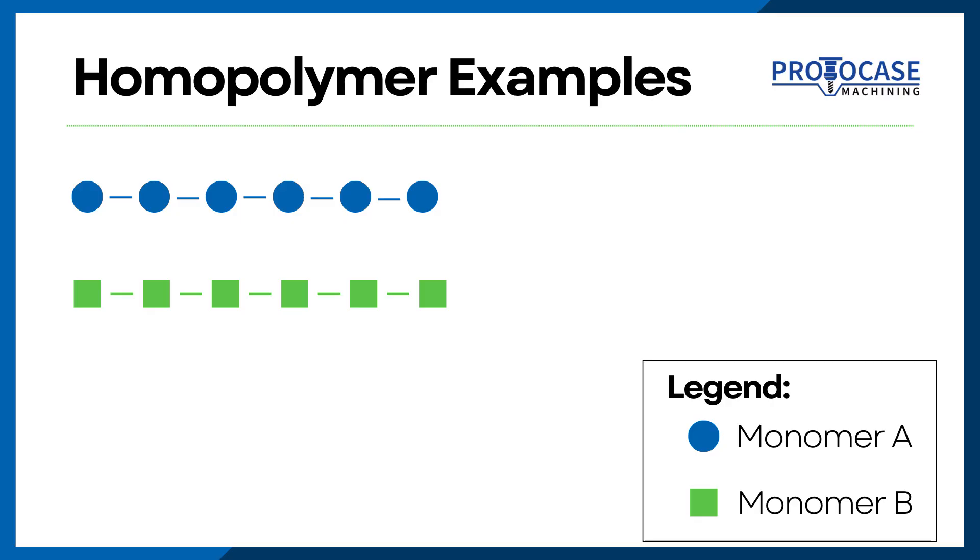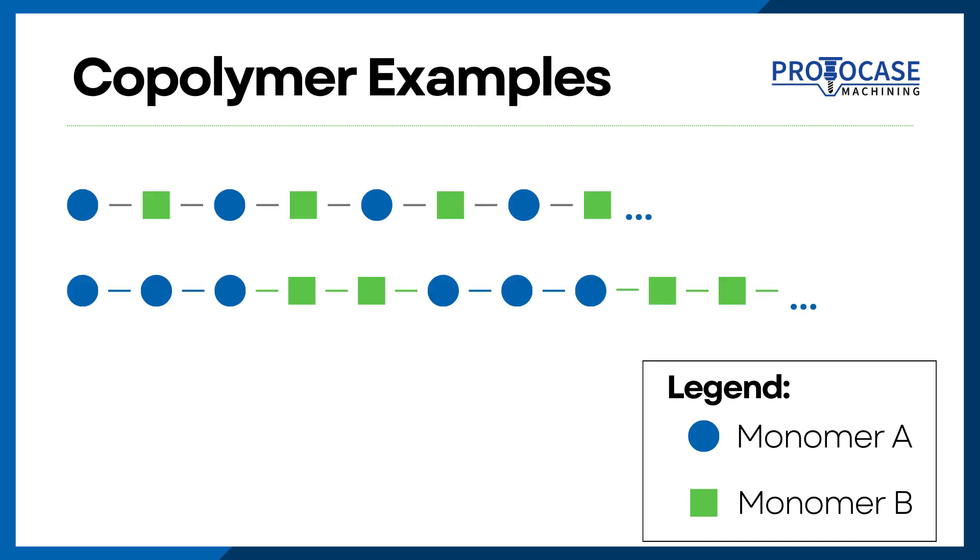First, a little refresher on polymers. On the chemical level, polymers are macromolecules. They are repeating patterns of smaller molecules called monomers. Monomers can be thought of as the building blocks of polymers. Homopolymers are polymers with only one type of monomer. Copolymers exist when there are two or more types of monomers.